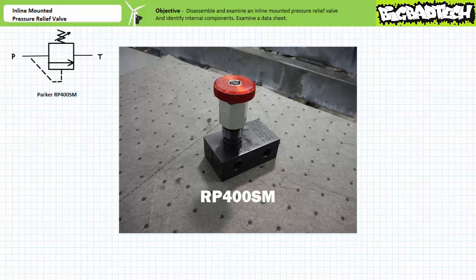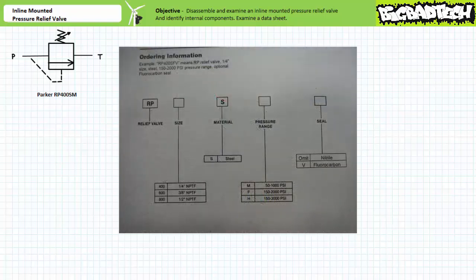Interpreting the part numbers is astoundingly easy. The data sheet shows that Parker uses five identification fields, technically six. The five main identification fields are valve type, size, material, pressure range, and seal composition.